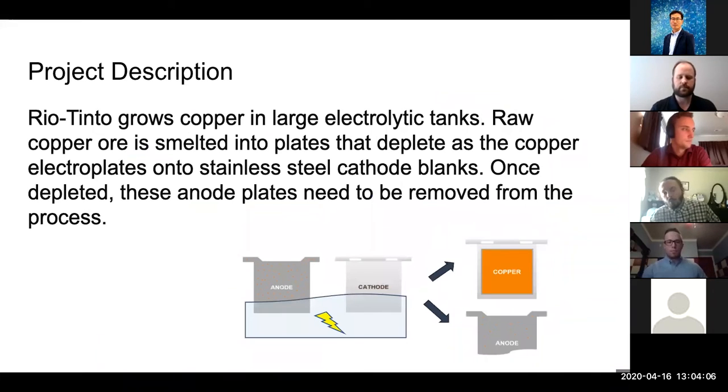Specifically, we were able to work with Rio Tinto's operations team in the tank house. What happens in the tank house is they grow copper on stainless steel plates through a process called electroplating. These plates are placed in electrolytic tanks. As the anode deteriorates, the copper ions stick and grow on those cathodes. As those anodes deteriorate, they have to be removed from the system.